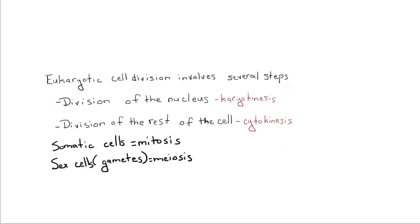Somatic cells, or body cells, are going to accomplish karyokinesis by what is called mitosis. Sex cells, or gametes, are going to accomplish karyokinesis by what is called meiosis. And in this video, we're going to be covering mitosis.